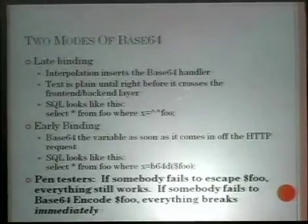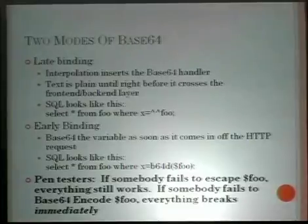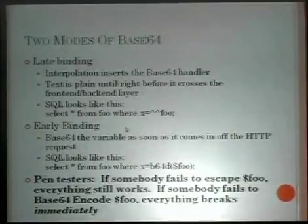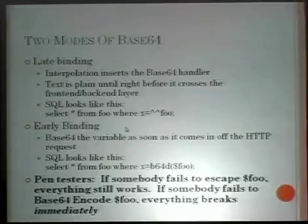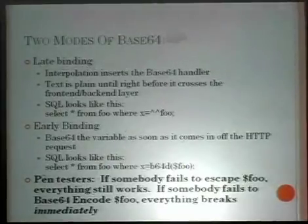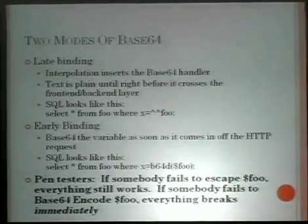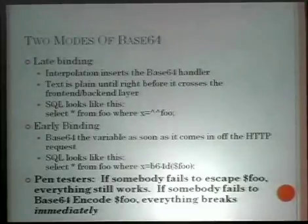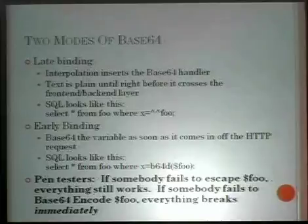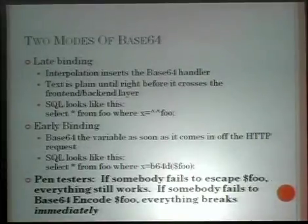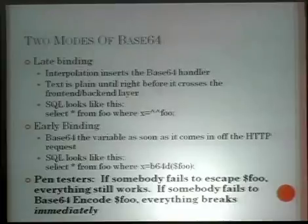The other approach is early binding, where you base64 the variable as soon as it comes in from the HTTP request, and as it passes through all of those functions, it remains base64 encoded. So it's a big pile of crap. If any of those intermediate functions actually need to work on it, they need to decode, they need to look inside, they need to change what they do, and then they need to re-encode.